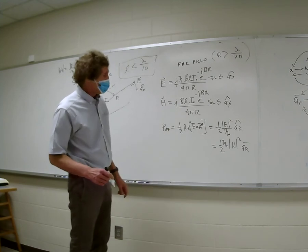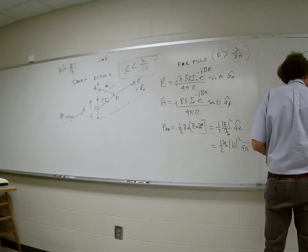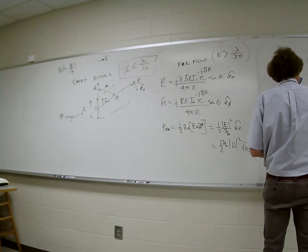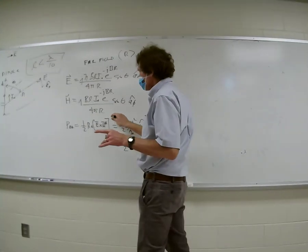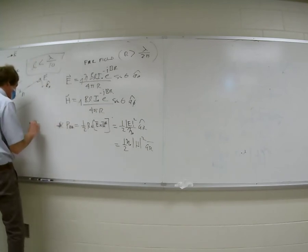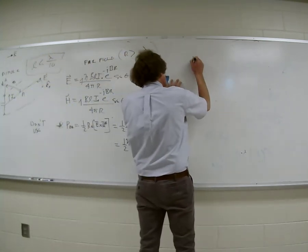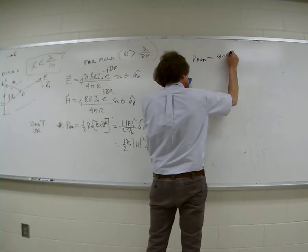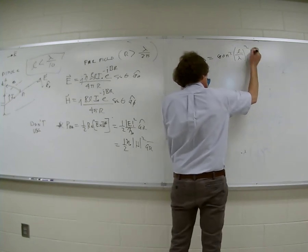That's the average power. Now let me continue. Remember we calculated the radiation resistance and found it was 80π² times (L/λ)² ohms. Do you all remember that? That's from the short dipole formula.